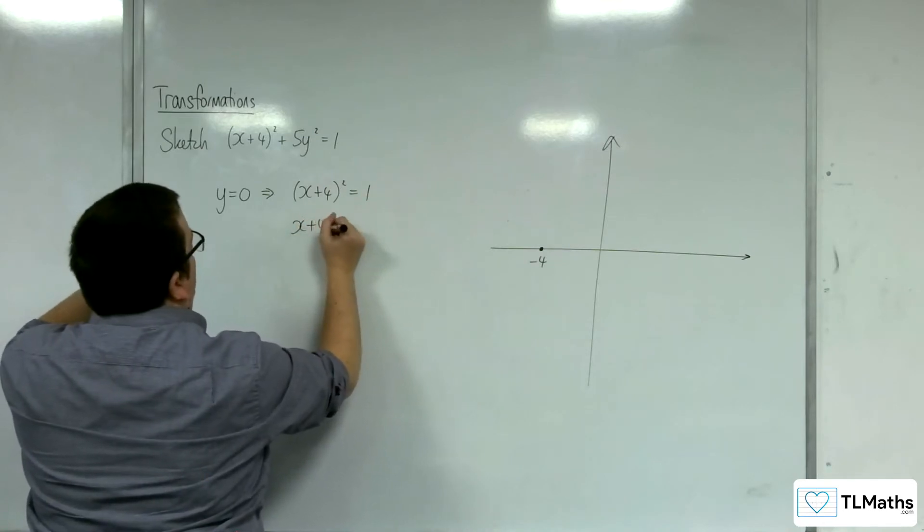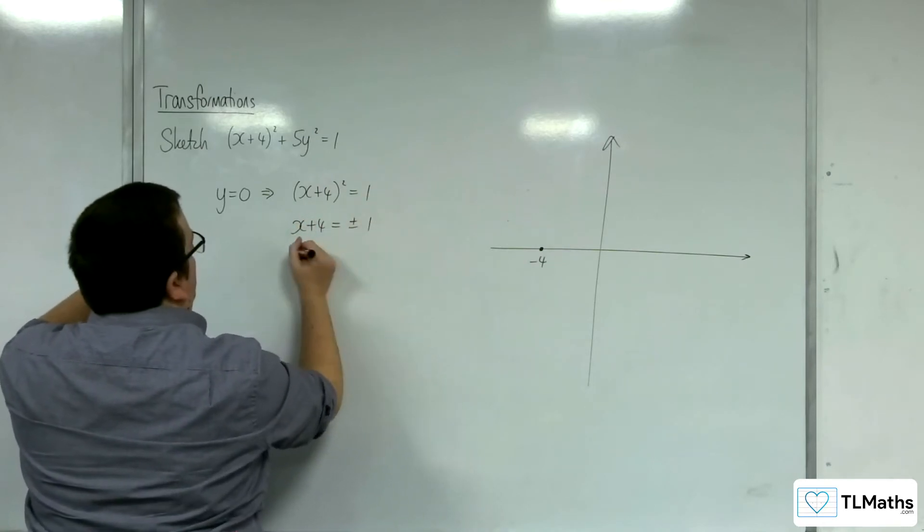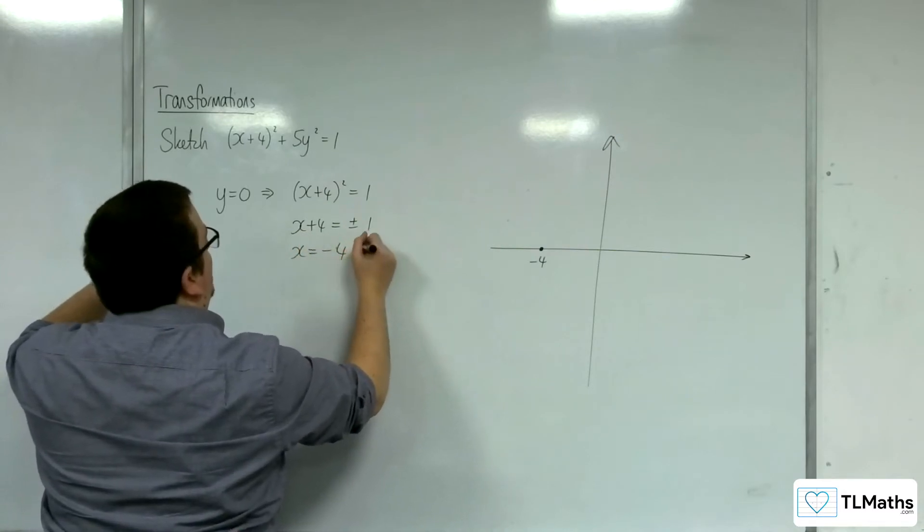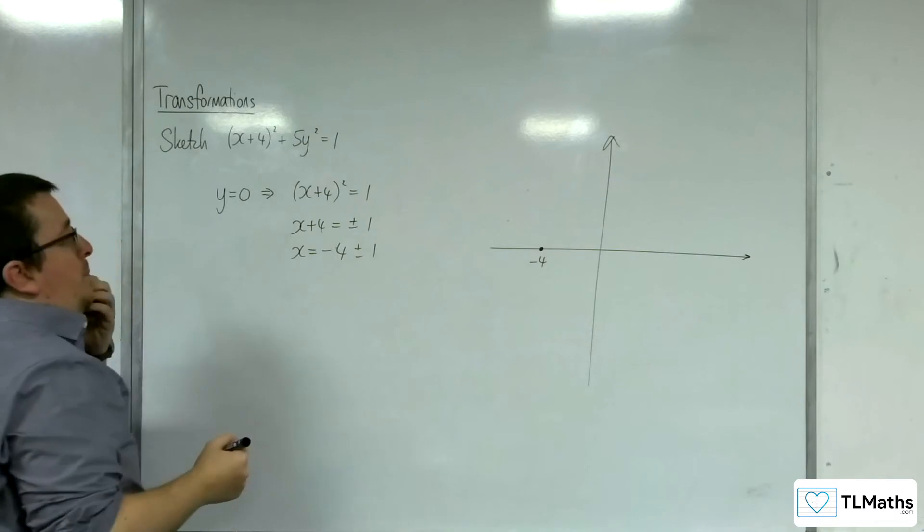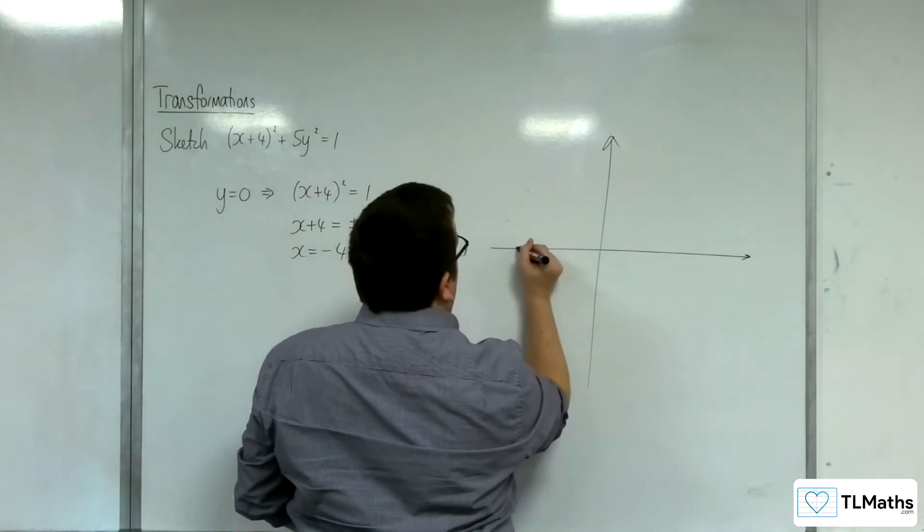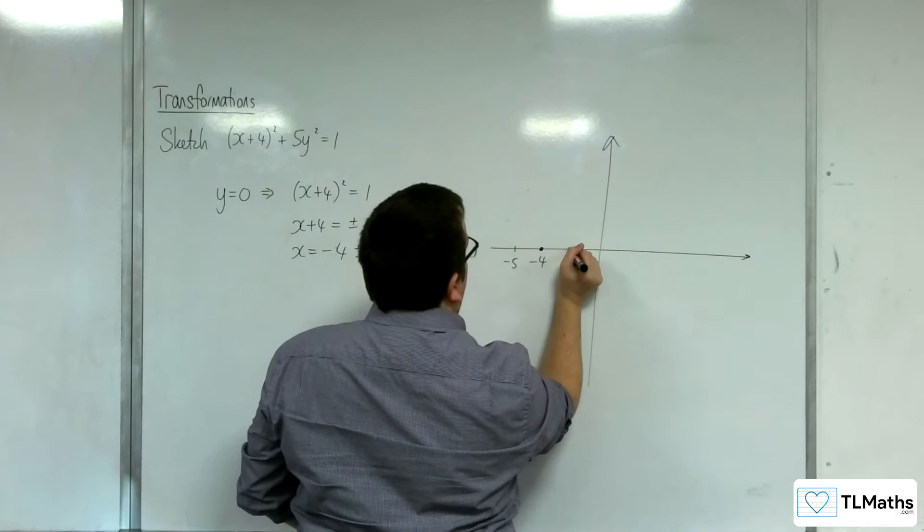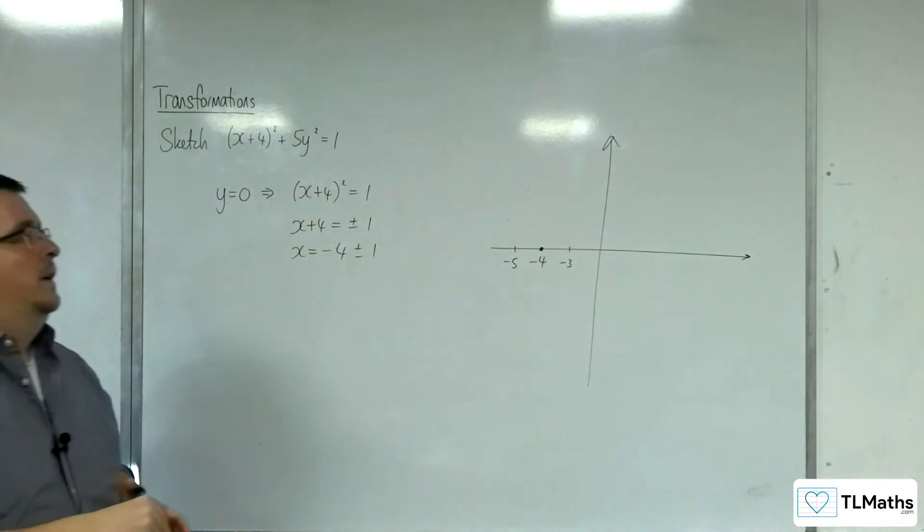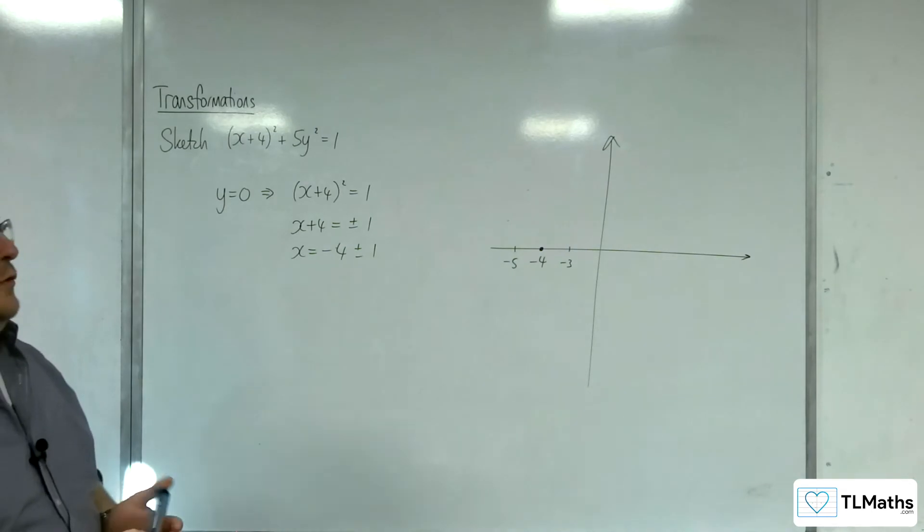So, when y is 0, we get x plus 4 squared equals 1. And so, x plus 4 must be equal to plus or minus 1. So, x is equal to minus 4, plus or minus 1. So, that would be 1 either side. So, minus 5 and minus 3. So, those are the points where it's crossing the x-axis.